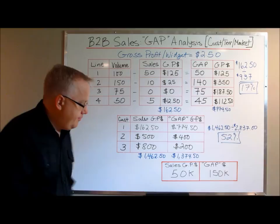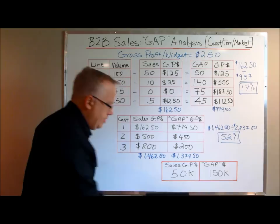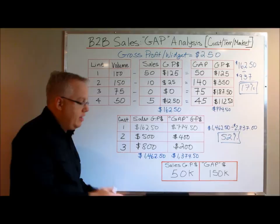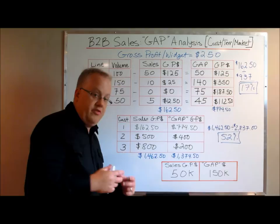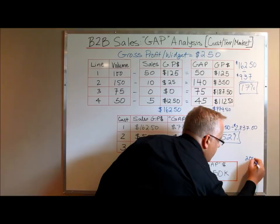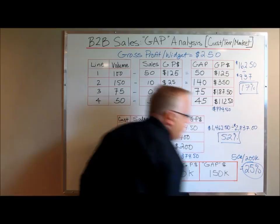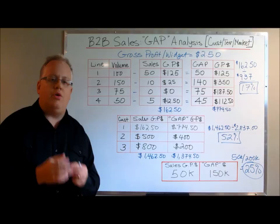Now I take multiple territories to define the gap within the market. When I add all sales across multiple territories managed by multiple salespeople I get $50,000, and the gap across those territories is $150,000. To define market share, I take $50,000 plus $150,000 — that's $200,000 potential in the market — and my sales of $50,000 divided by $200,000 is 25 percent market share.